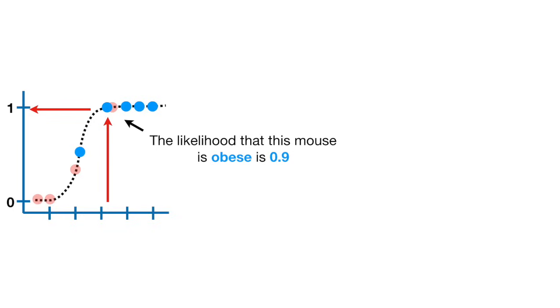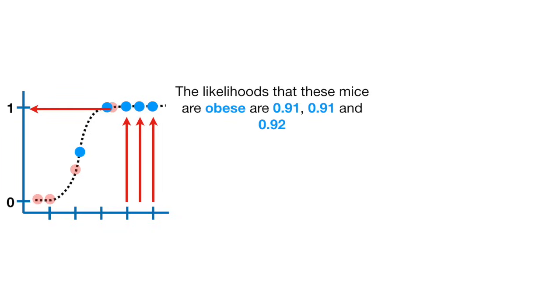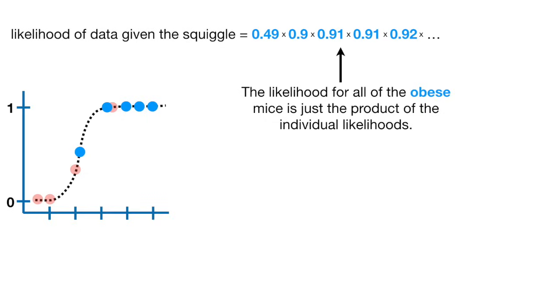The likelihood that this mouse is obese is 0.9. The likelihoods that these mice are obese are 0.91, 0.91, and 0.92. The likelihood for all of the obese mice is just the product of the individual likelihoods.